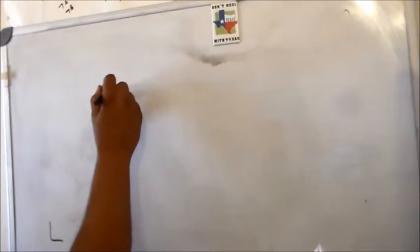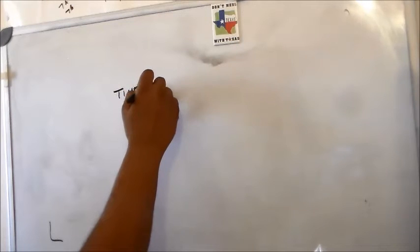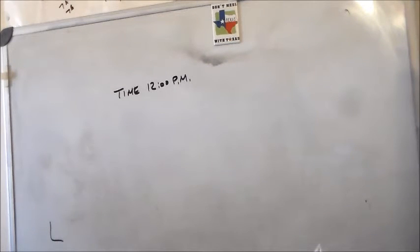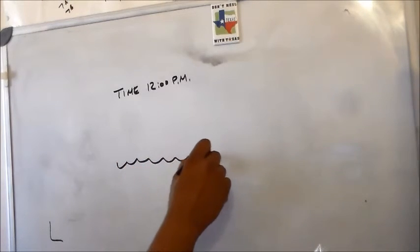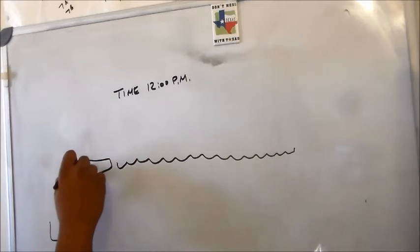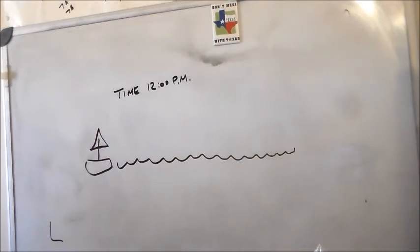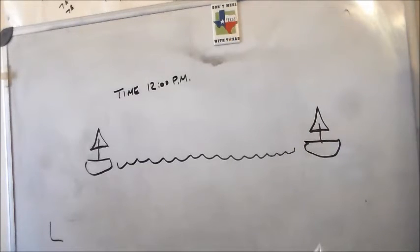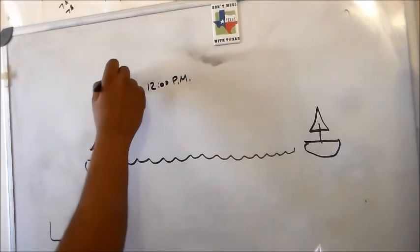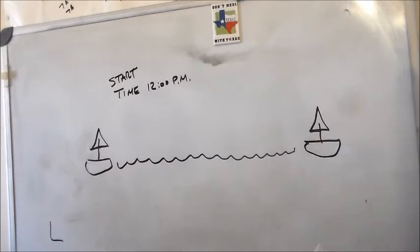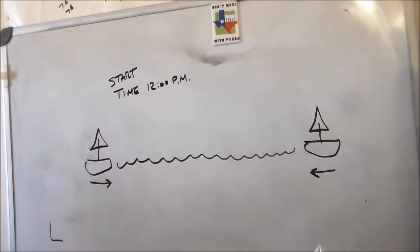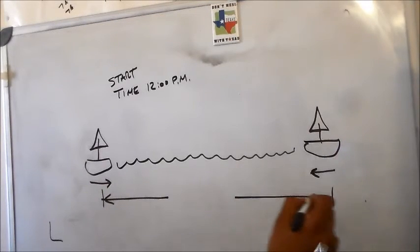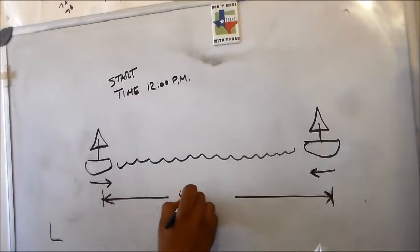We're dealing with time at 12 noon. We have two vessels, two boats on the water. We will have boat one, that is my failed attempt at a sail, and we have boat two. At 12 noon, this is the start time. Both of these boats are sailing towards each other.